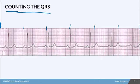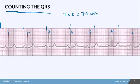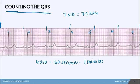From here to here it is six seconds, so I have a six-second strip. I then count my QRS: 1, 2, 3, 4, 5, 6, 7. I multiply 7 times 10 and I get a heart rate of 70 beats per minute. The reason you multiply by 10 is because 6 times 10 equals 60 seconds, which is one minute — so that's why you multiply by 10 to get your heart rate per minute.